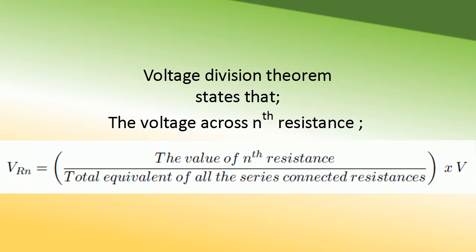The voltage division theorem states that the voltage across the nth resistance, VRn, is equal to the ratio of the value of the nth resistance to the total value of all resistances connected in series, multiplied by the total voltage applied.